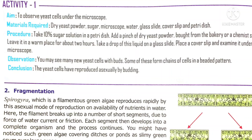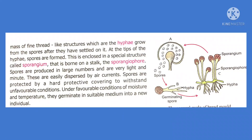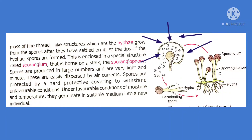The third mode of asexual reproduction is spore formation. Organisms like fungi undergo spore formation. If a piece of bread is kept in a moist or warm place, we can observe masses of fine thread-like structures called hyphae, which grow from spores after they have settled on it. At the tip of the hyphae, spores are formed. The spores are enclosed in a particular structure called the sporangium. Such spores are very light and very minute.